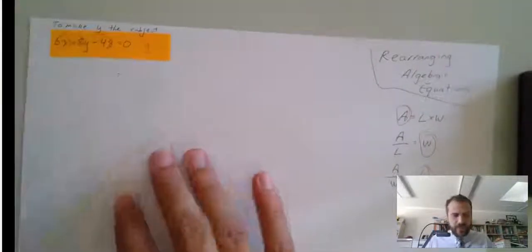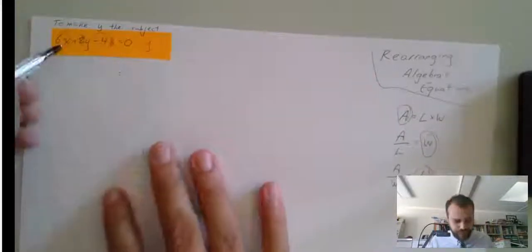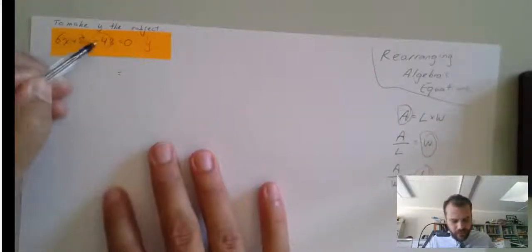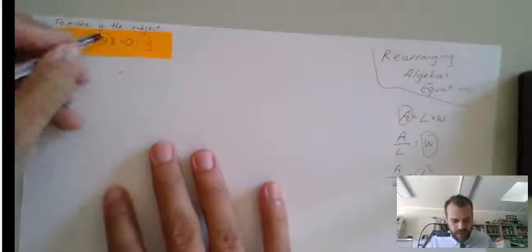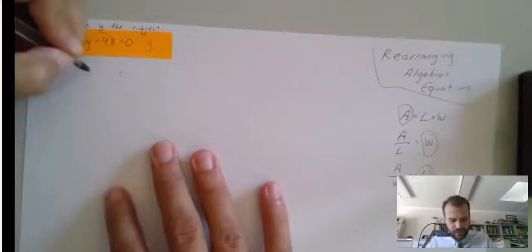Now, first of all, you need to move any terms that you can. So, 6x plus 8y minus 48 equals 0. This negative 48 and this positive 6x can both go to the other side.